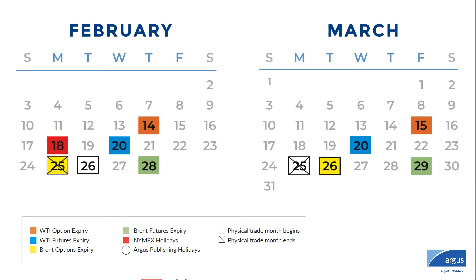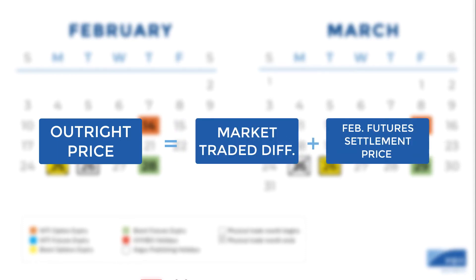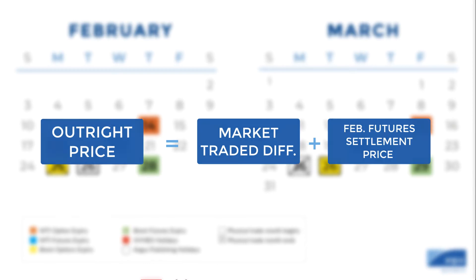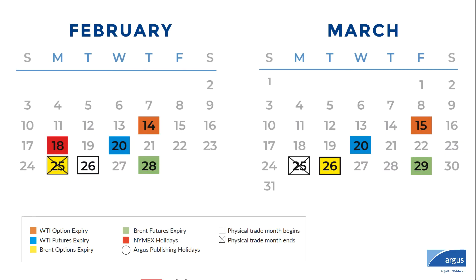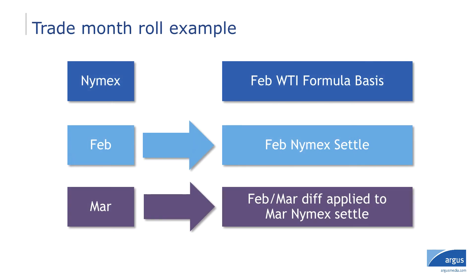For example, on most days when Gulf Coast physical barrels for February delivery are traded, you get the outright price by adding the market traded differential to the February NYMEX light crude futures settlement price. But in the last three days of pipeline trade for February delivery, there is no February NYMEX futures settlement because that contract has expired. So to get a basis outright price, Argus takes the new March NYMEX crude futures contract at Cushing and adds the cash roll to February.